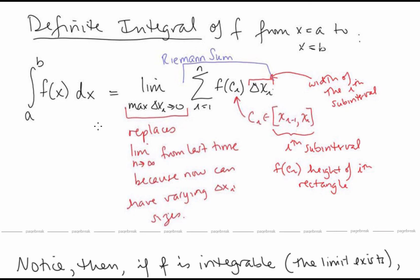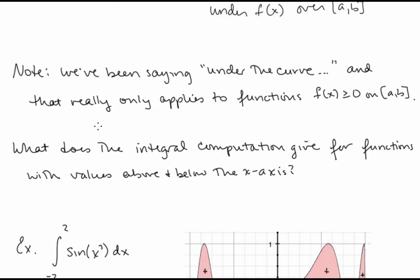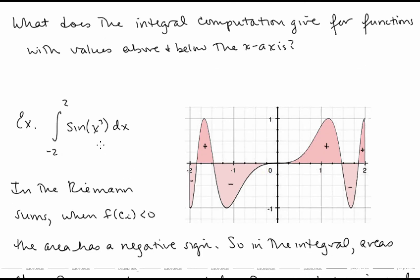So what does this integral give us for functions that have both positive and negative values? For example, f of x equals sine of x to the third has values both above and below the x-axis. If we take the integral from negative 2 to 2, notice that where f of c i is positive, we get a positive rectangle area, but where f of c i is negative, we get that area with a negative sign. So areas above the x-axis are counted with a positive sign, and areas below the x-axis are counted with a negative sign.